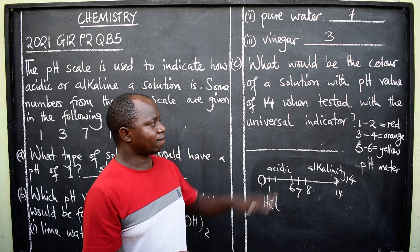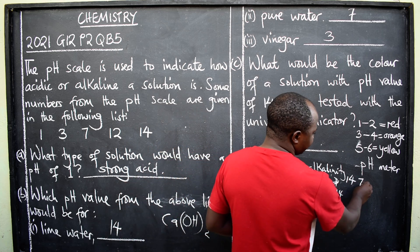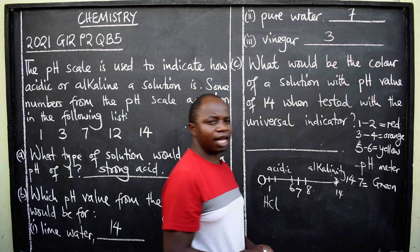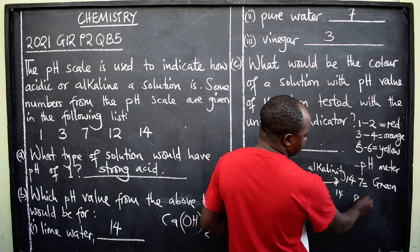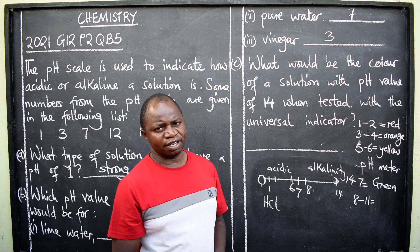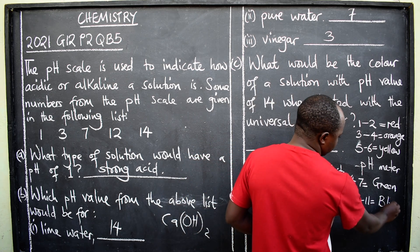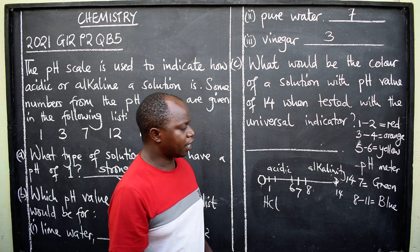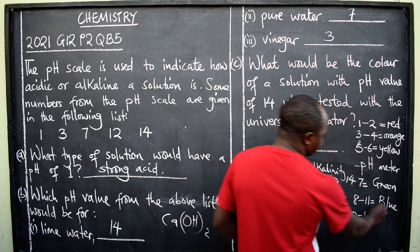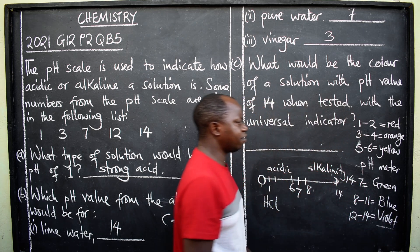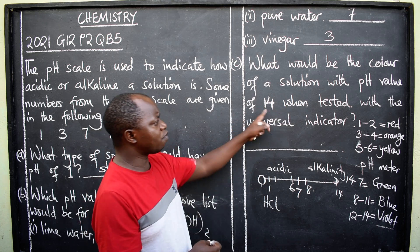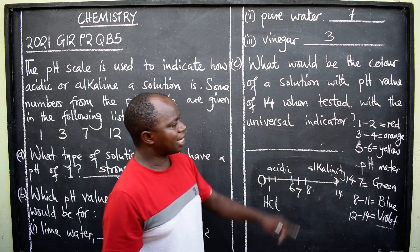Please take note of those colors under the universal indicator. Then 7, which is neutral, will give you green. Then 8 to 11, which we are now under bases, will be blue. Then 12 to 14 will give you violet. With these colors in mind, we can move on to the question: what would be the color of a solution with pH value of 14? We have seen where it falls — 14 — so the color there will be violet.